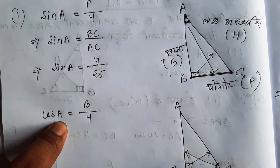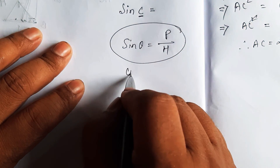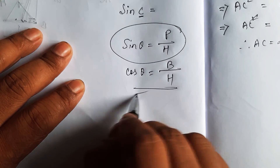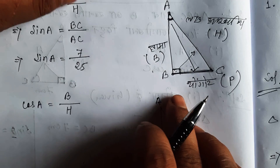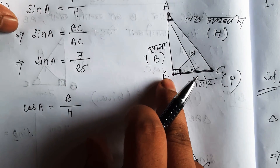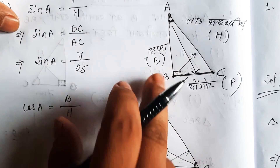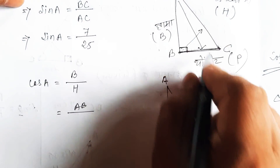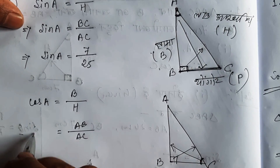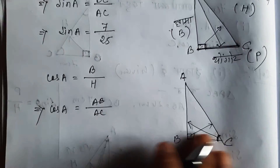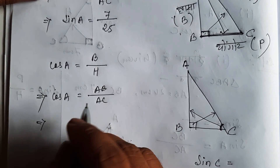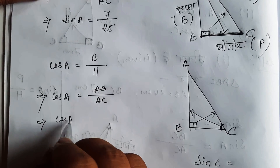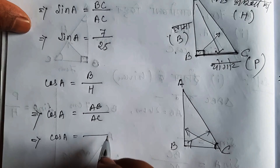This is B by H — base by hypotenuse. This is the formula of B by H. This is AB, and AB over AC gives cos A.